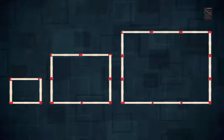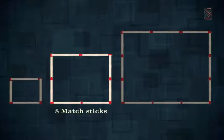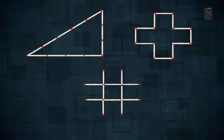Look at these squares — they are made with four, eight, and twelve matchsticks respectively. In the same way, we can make different shapes with the same number of matchsticks. These are the different shapes made with twelve matchsticks.